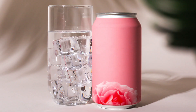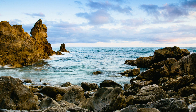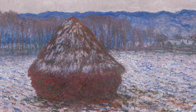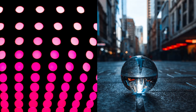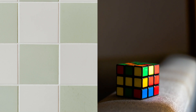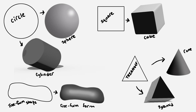An aluminum can is an example of the geometric form called a cylinder. Rocks and clouds, by contrast, are freeform, as is the stack of wheat in this image. In art, a close relationship exists between shapes and forms. A two-dimensional circle and a three-dimensional sphere have the same round outline. A two-dimensional square can be stretched into a third dimension to become a cube. These and other shape-form relations are shown in this image.